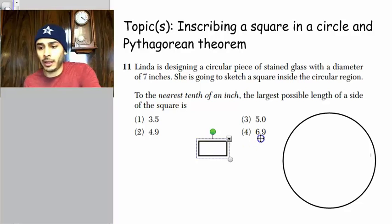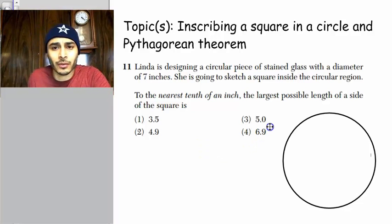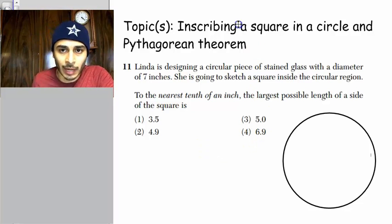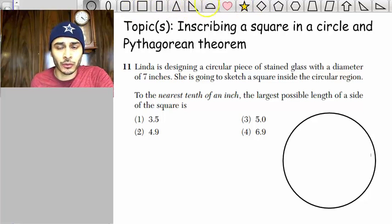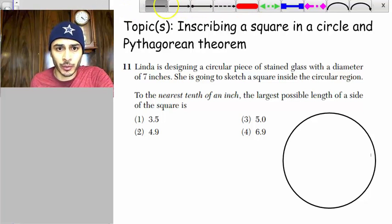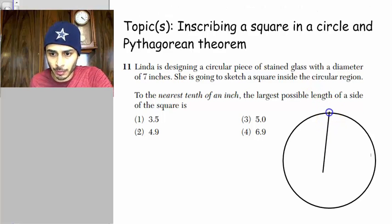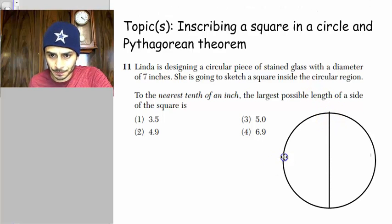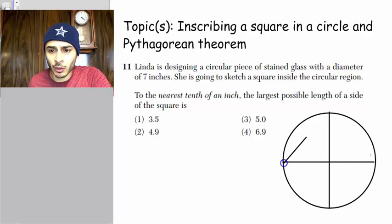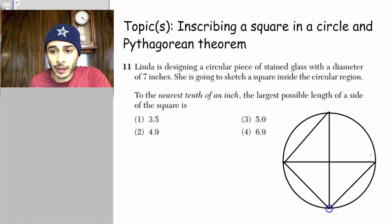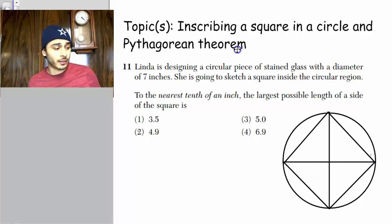There's a circle, and I want to inscribe a square in it. Now, if you're doing this right, you would use a compass. The point is, you're going to inscribe a square into it, so just bear with me.